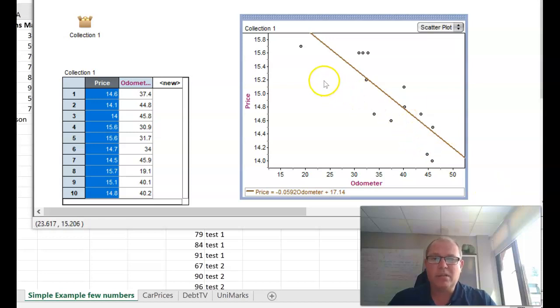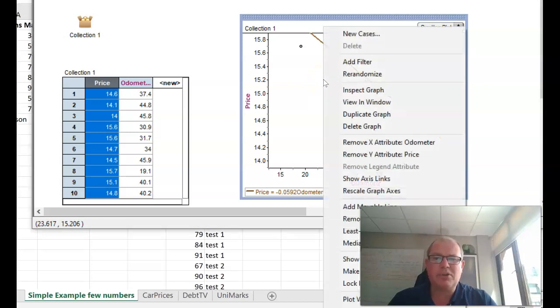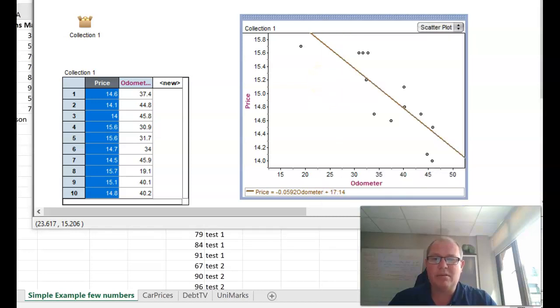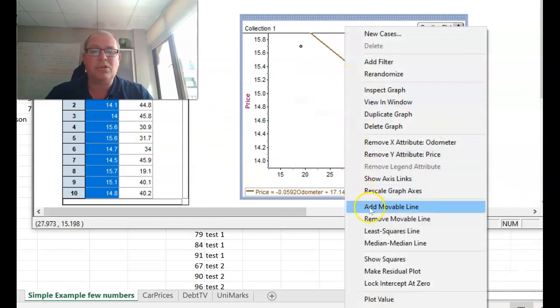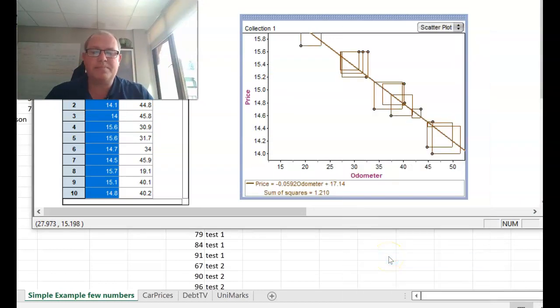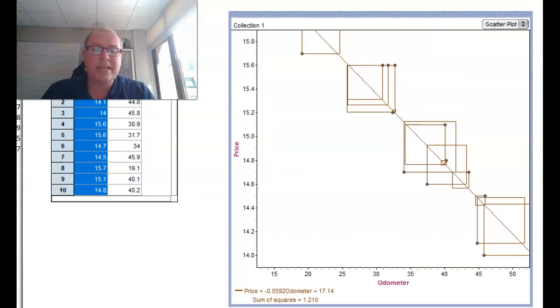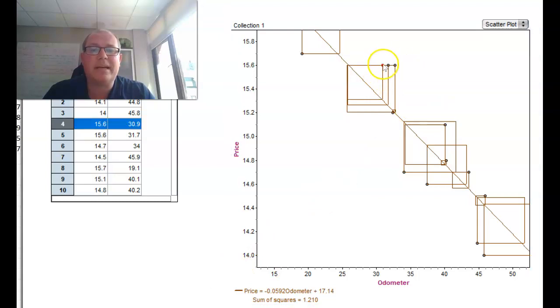Hopefully you've all got your movable line on there. Now we're going to find out whose line is the best. This is the competition part. We're going to find a measurement for this so I'm going to right click and I want you to do show squares. What we've got here is every point they've worked out the vertical distance from that point to the line.